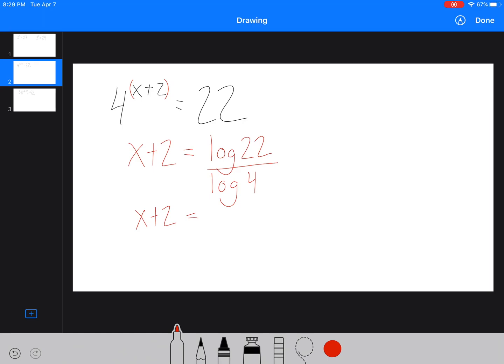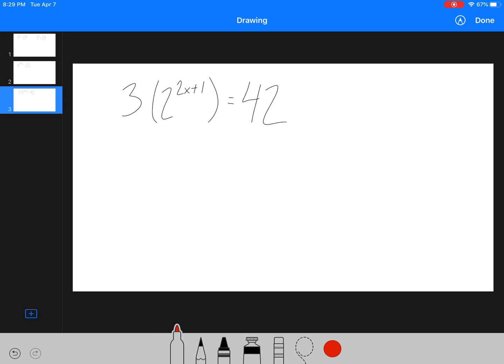So x plus 2, and we'll go to three decimals here. Log 22 divided by log 4 is equal to 2.22. We'll just leave it like that, and then x is equal to 0.22. These are approximate because there are a lot of decimals there.